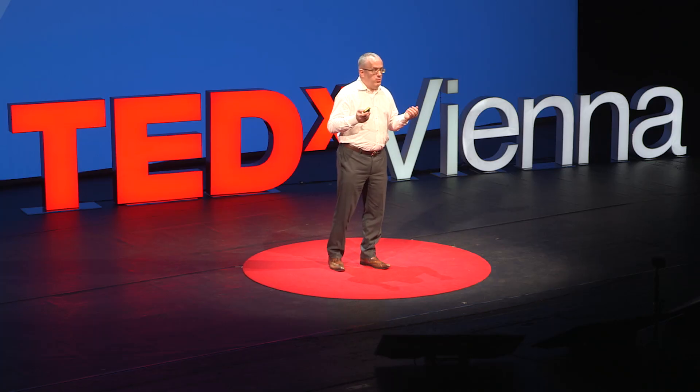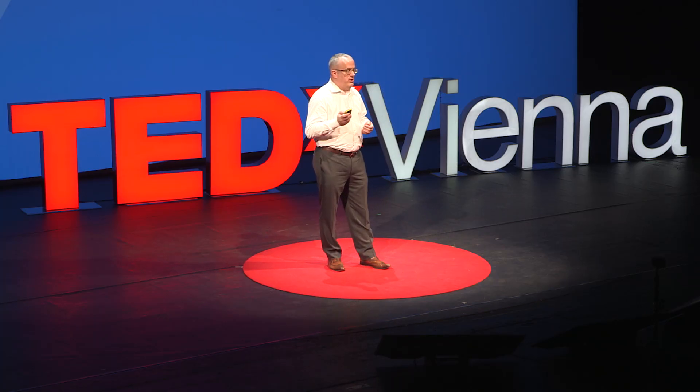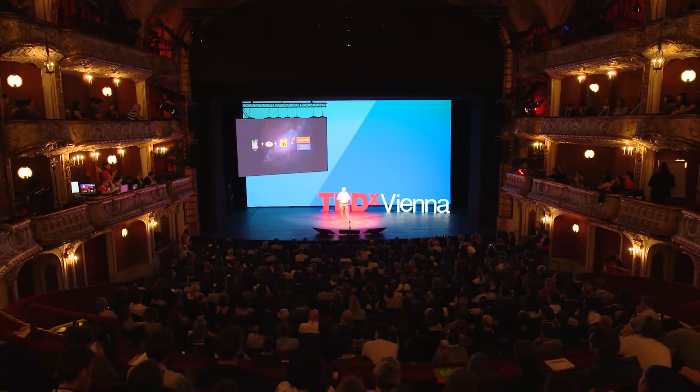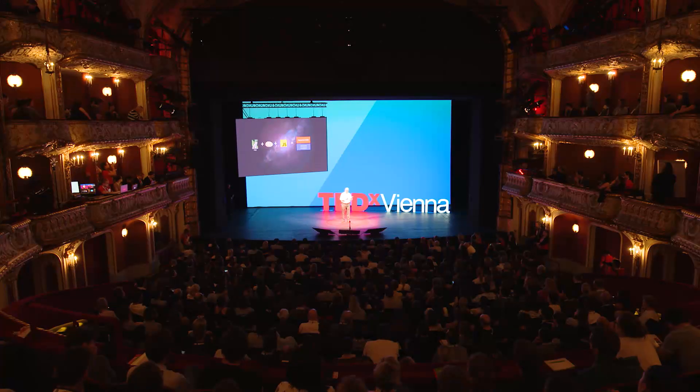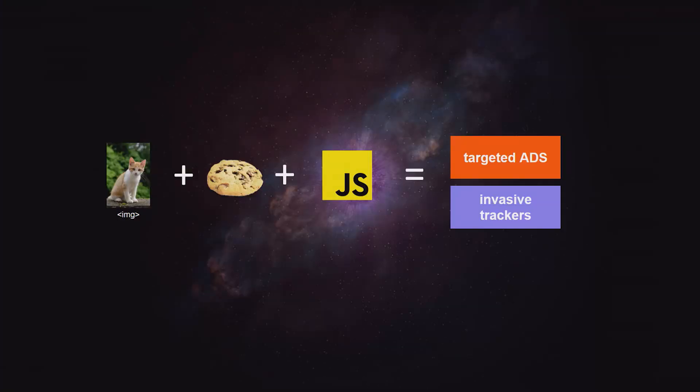In 1995, I added JavaScript, and that made things even more powerful. You could set cookies from JavaScript — you could do things that weren't possible before. But what happened was not intended. It was a side effect, not a strategy. Between images you could load from anywhere, cookies that could store data on your computer, and JavaScript, targeted ads and invasive tracking were invented.